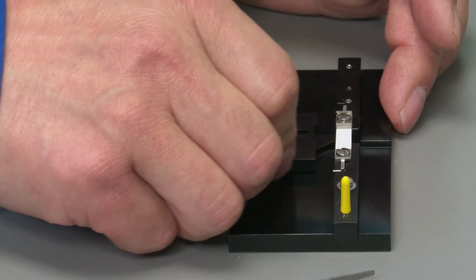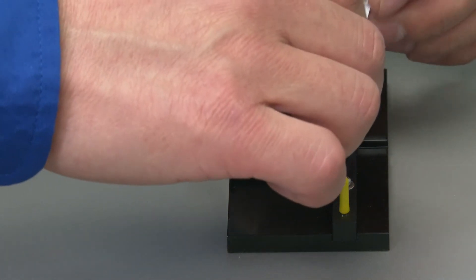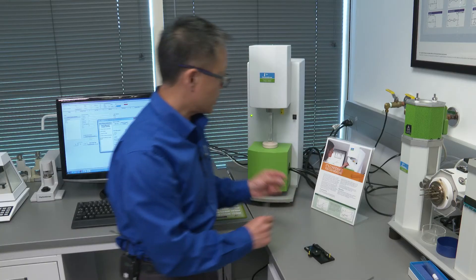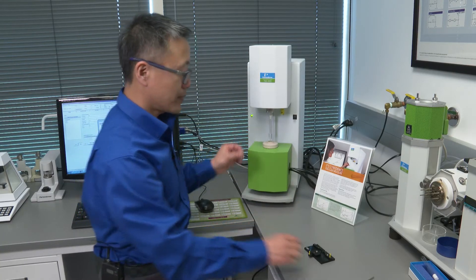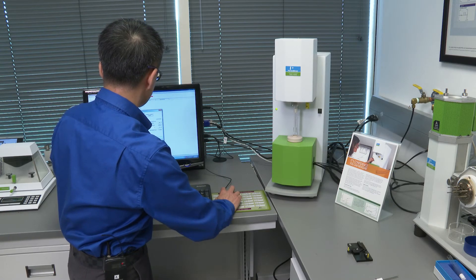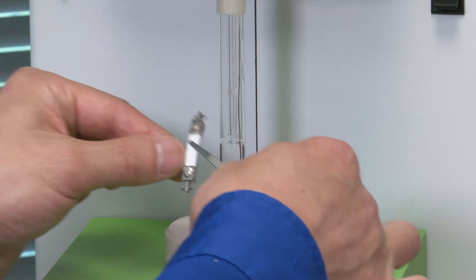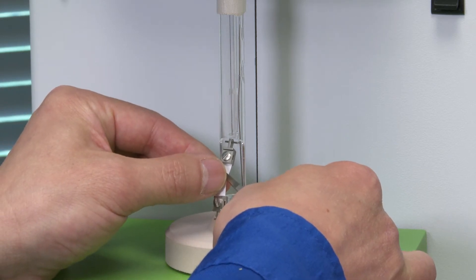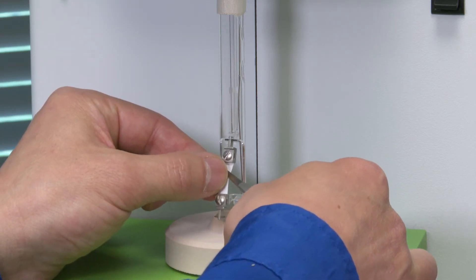Then you are ready to take this clamped sample out and load it into the TMA. You want to lower the probes and put the sample, the top part, the top clamp in the hook.